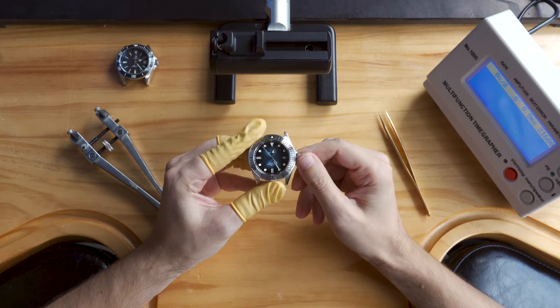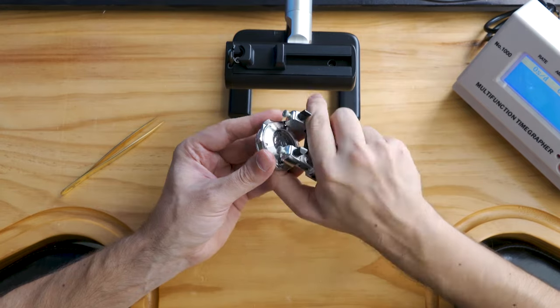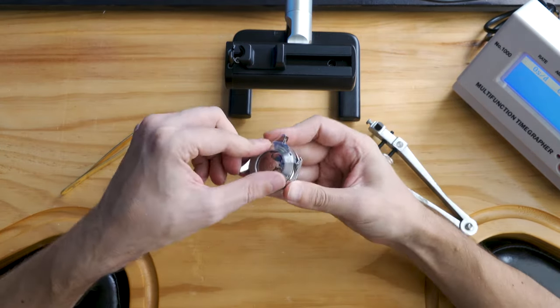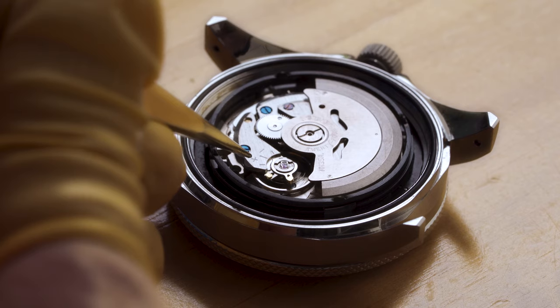Let's take a look at this watch. We'll take off the case back first to access the movement inside. If the watch is running you should see an oscillating wheel.